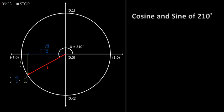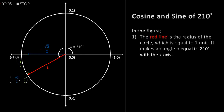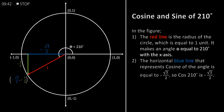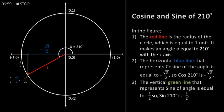Cosine and sine of 210 degrees. In the figure, the red line is the radius of the circle which is equal to 1 unit. It makes an angle theta equal to 210 degrees with the x-axis. The horizontal blue line that represents cosine of the angle is equal to minus square root of 3 by 2. The vertical green line that represents sine of the angle is equal to minus 1 by 2, so sin of 210 degrees is equal to minus 1 by 2.